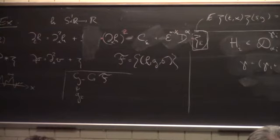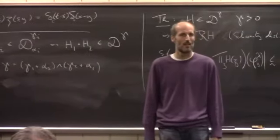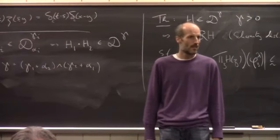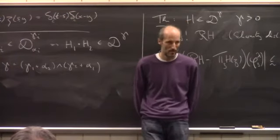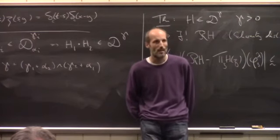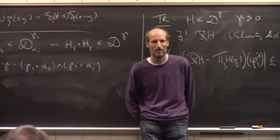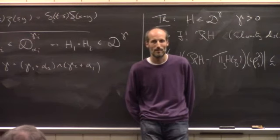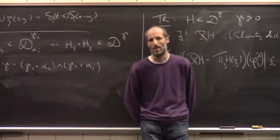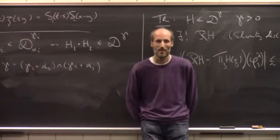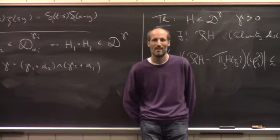Is there an analog of anomalous dimension here — are there dynamically generated small deviations from what power counting gives? The dimensions are fixed from the outset by power counting. And did this elaborate structure come from studying quantum field theory, or just from analysis? It really just came out of analysis — but then at some point you realize that you're doing the same thing as physicists.